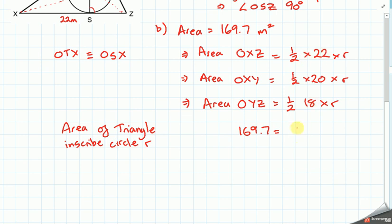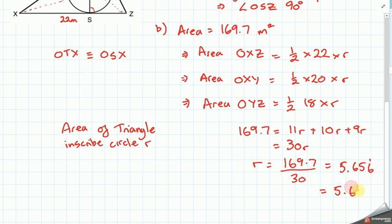169.7 is equal to 11R plus 10R plus 9R. Total of those is 30R, so, R is 169.7 divided by 30, which, according to my calculator, I won't put the one on the screen, gives me an answer of 5.65 and 6 recurring. 0.656 and this 6 recurs. So, for a reasonable distance, as this is in meters, I'll give it to the nearest centimeter, 5.66 meters to the nearest centimeter.